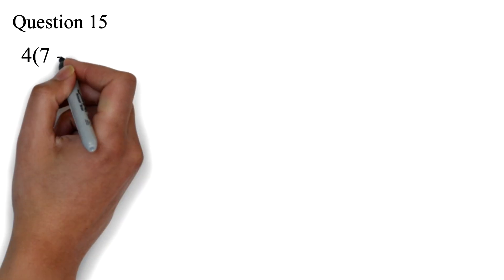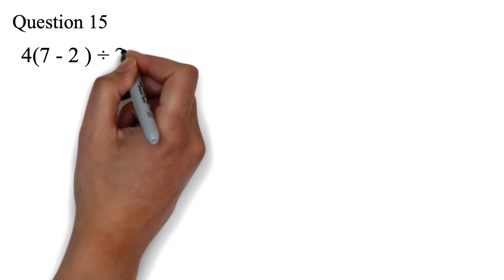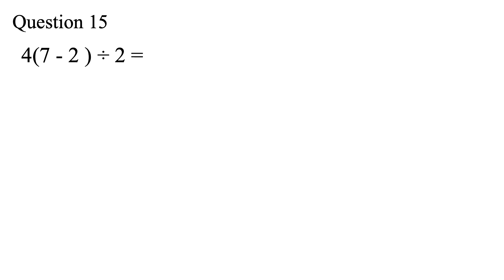Question 15. We are supposed to calculate this without using a calculator. 4, parentheses, 7 minus 2, divided by 2, equals. In math, if you see a number attached to another value in parentheses, it means it's multiplying. So, 2, parentheses, 4 is the same as 2 times 4.